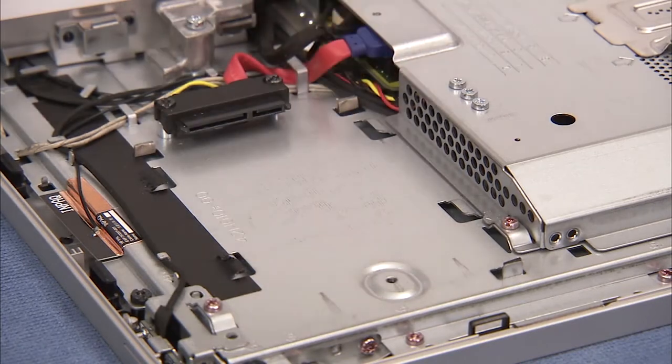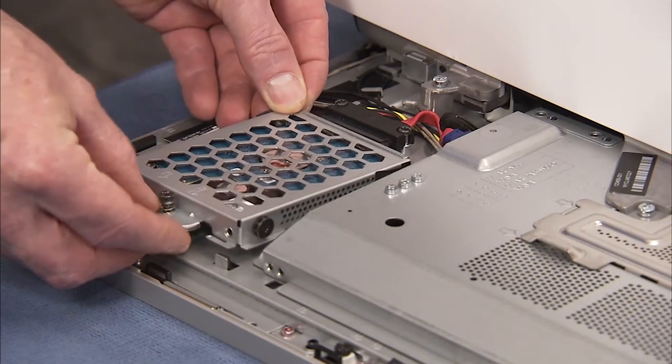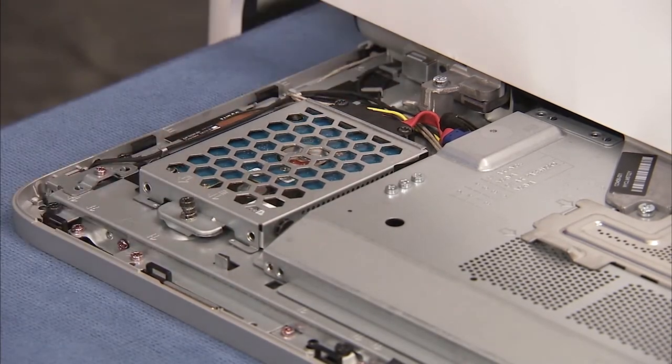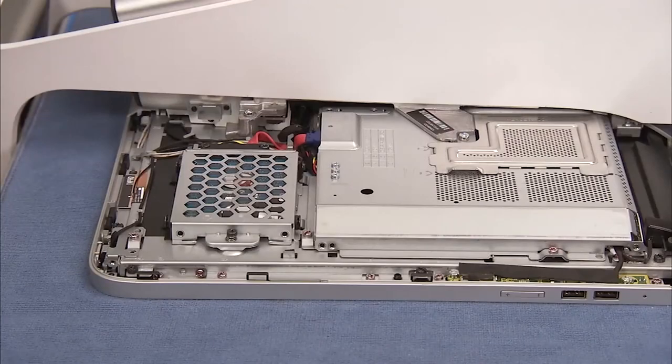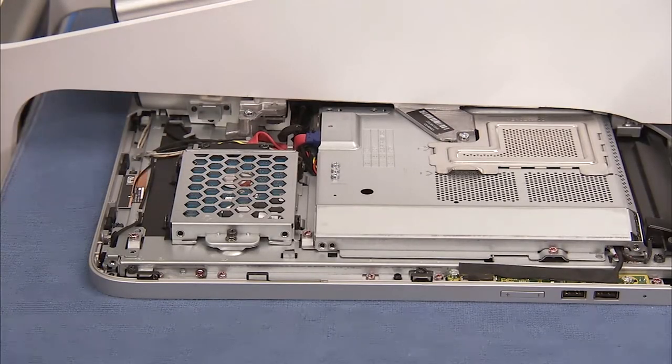To replace the hard drive cage into the PC, place the tabs on the cage near their tabs on the PC. Then slide the cage in sideways until secure. Tighten the captive Phillips No. 2 screw to secure the hard drive cage in the PC.